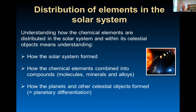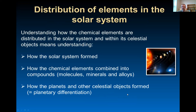Understanding how the chemical elements are distributed in the solar system and within its celestial objects means we have to understand how the solar system formed, how the chemical elements combine from isolated atoms into compounds like molecules, minerals and alloys, and eventually how the planets and other objects form. And that is what we call planetary differentiation.